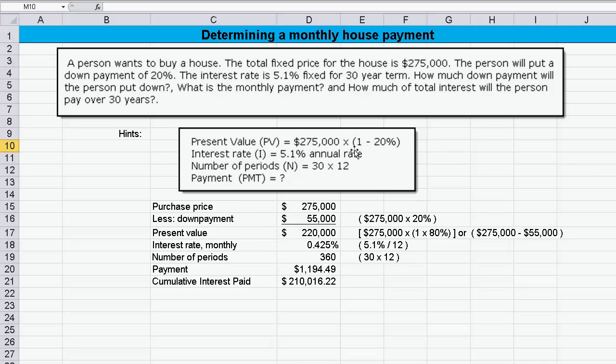Here's some hints. The present value would be equal to $275,000, the fixed payment, times 1 minus 20%, because we're putting 20% down. The interest rate given is 5.1%, that's an annual rate. The number of periods would be 30 years times 12 months, whatever that is. And then we have to calculate the payment and a couple other things as well.